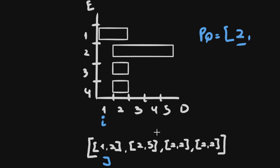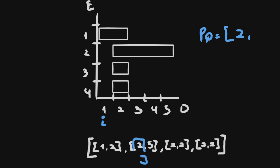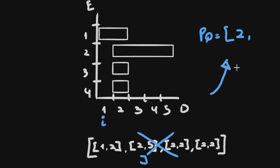We add the end day to the priority queue, so now we have a two there, and we update j. The start day for the next event is two, which differs from day one, so we set those events aside. We check if we have something in the priority queue — we have a two — so we pop it, meaning we can attend this event on day one. We add one to the result, so the result is now one.